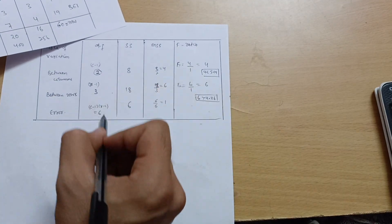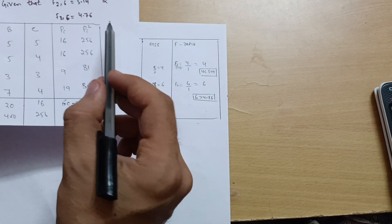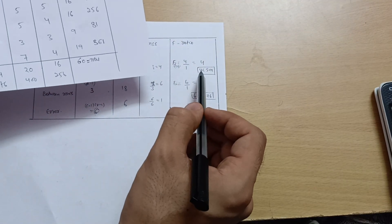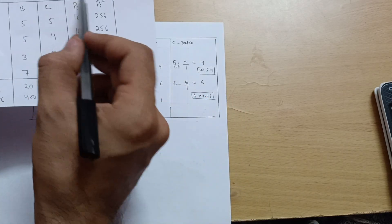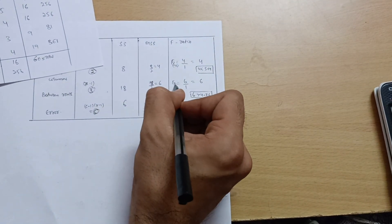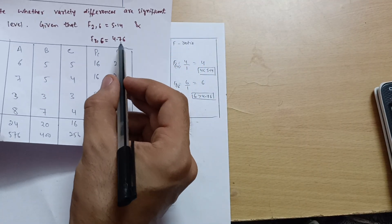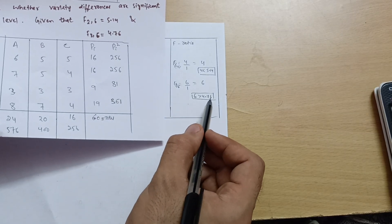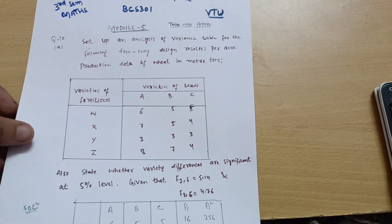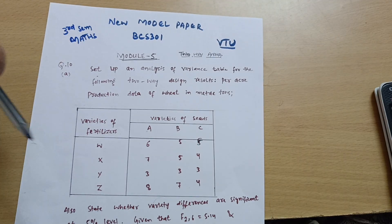For columns, F(2,6) calculated = 4, which is less than the table value 5.14, so the null hypothesis is accepted — column differences are not significant. For rows, F(3,6) calculated = 6, which is greater than the table value 4.76, so the null hypothesis is rejected — row differences are significant. I hope you understood this problem; ask doubts in the comment section. Best of luck for your examinations.